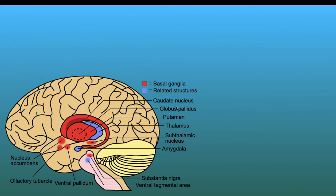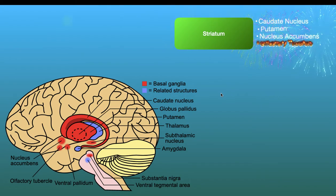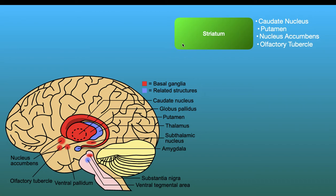Here we have our basal ganglia again. The striatum is made up of the caudate nucleus, the putamen, the nucleus accumbens, and sometimes the olfactory tubercle. The caudate nucleus and putamen make up the dorsal striatum, and the nucleus accumbens and olfactory tubercle make up the ventral striatum. When I talk about the striatum, I'll mostly be referring to the dorsal striatum.